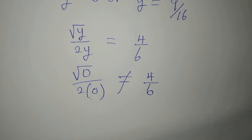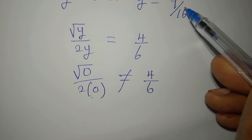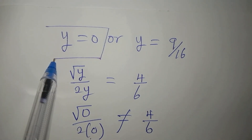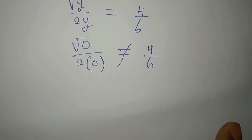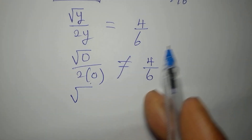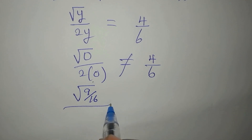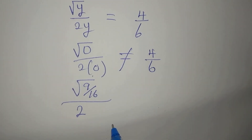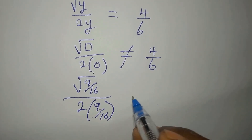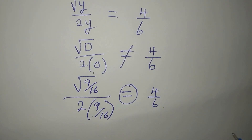Since y equals 0 is undefined, it must be rejected. Now substituting y equals 9 over 16: the numerator becomes square root of 9 over 16, and the denominator becomes 2 multiplied by 9 over 16. We want to check whether this equals 4 over 6.